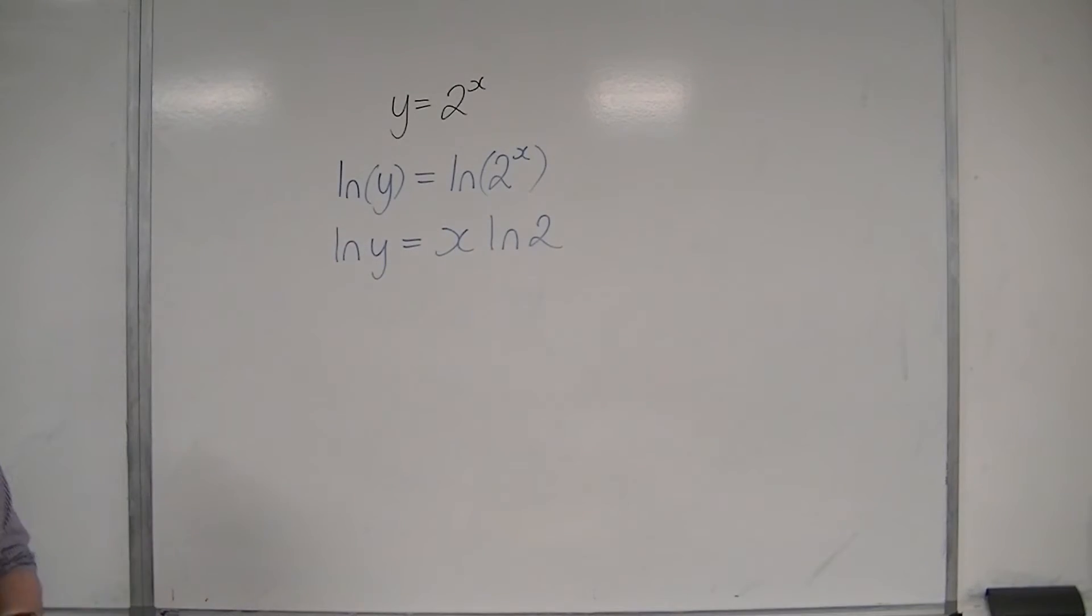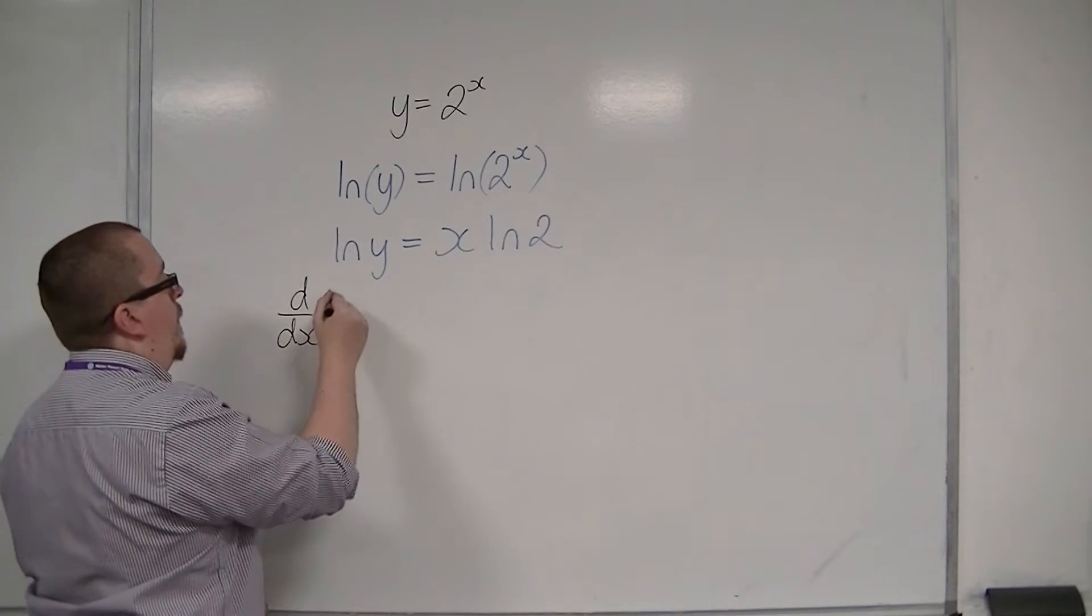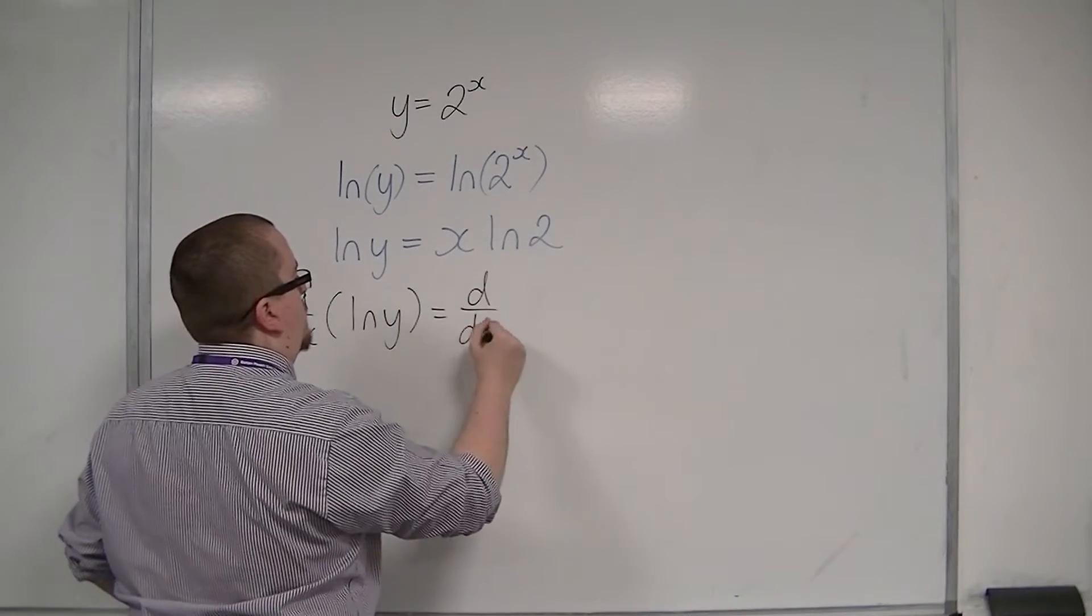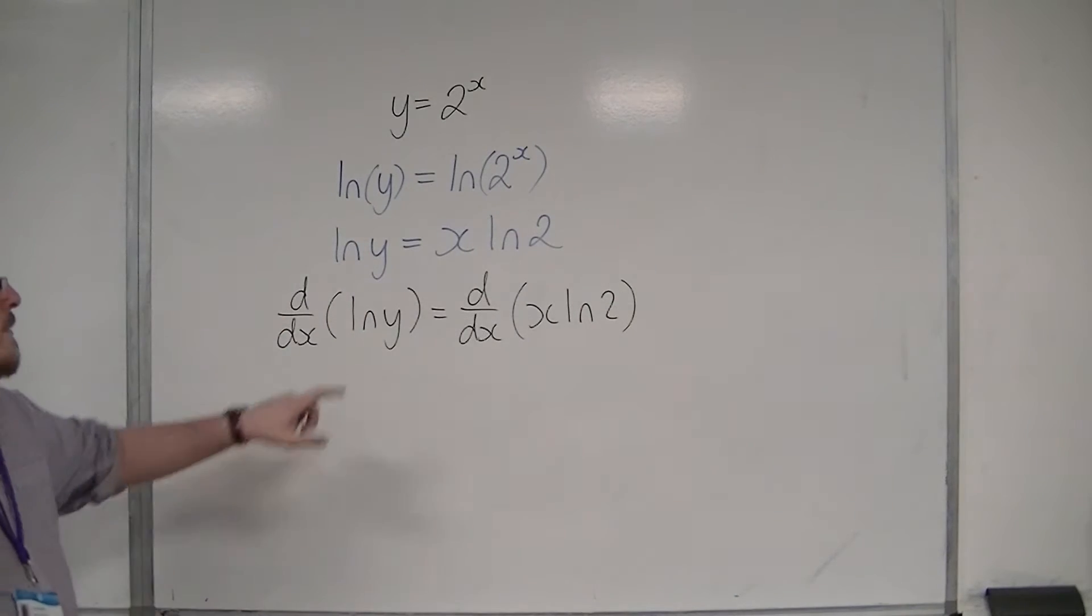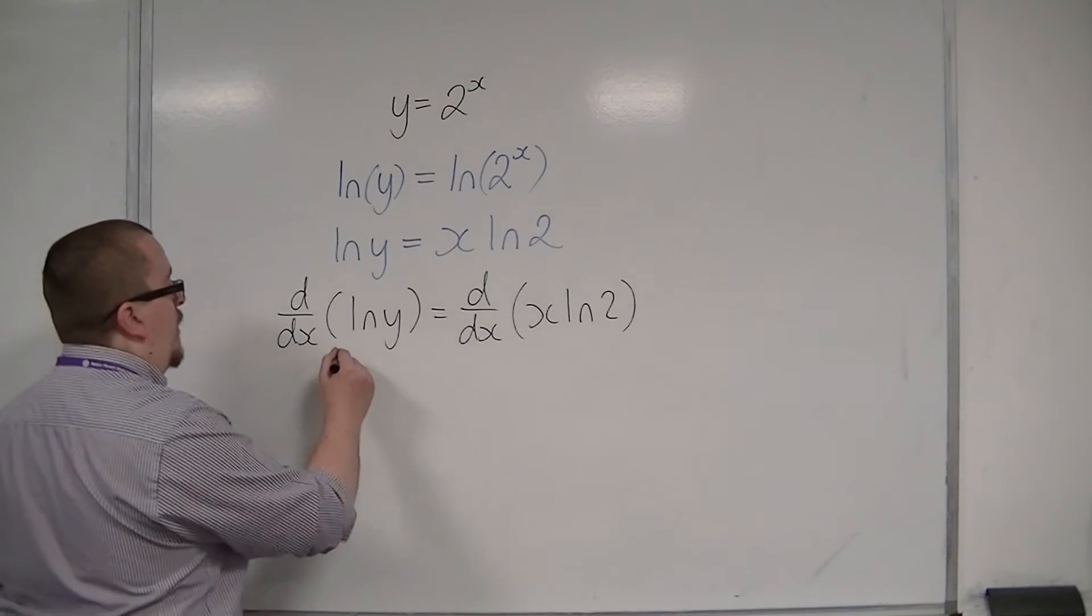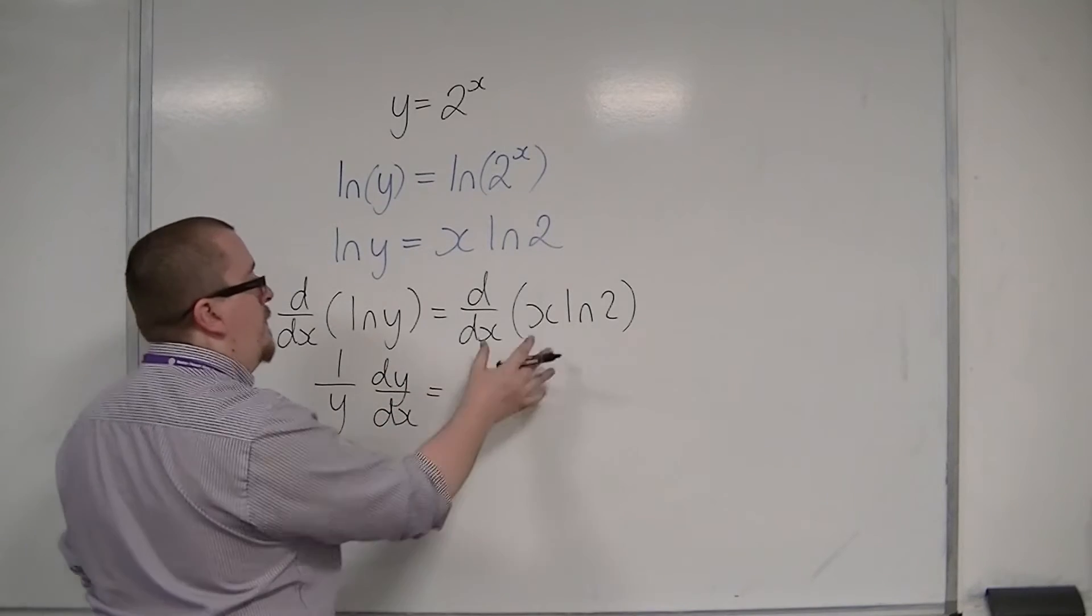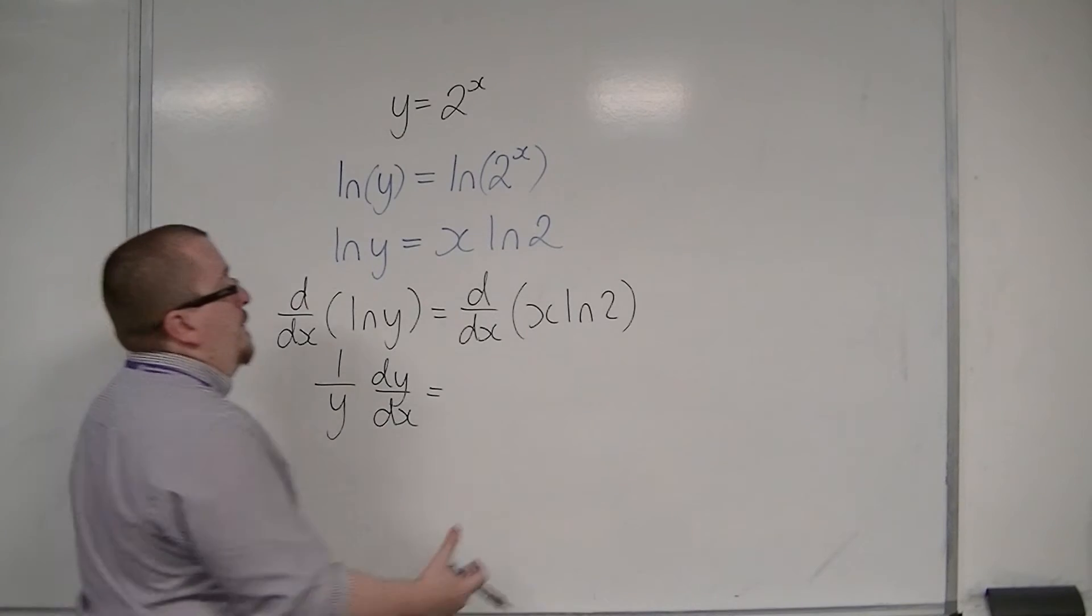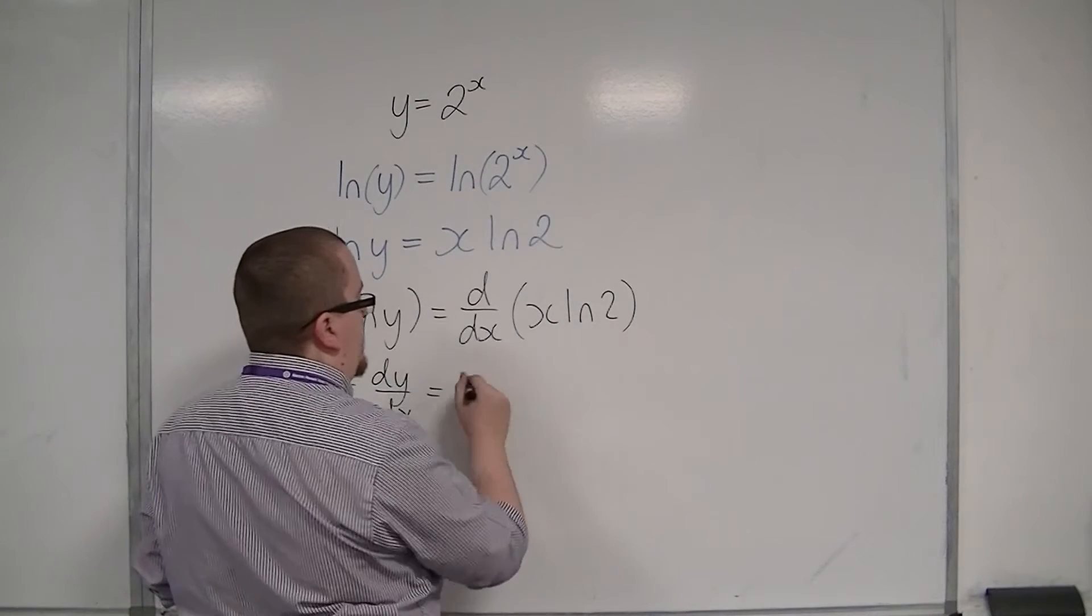I'm now going to differentiate both sides with respect to x. Now, the derivative of log y with respect to x is 1 over y dy by dx. The derivative of x log 2, well, log 2 is just a number. So differentiating 2x is just 2. So differentiating x log 2 is just log 2.